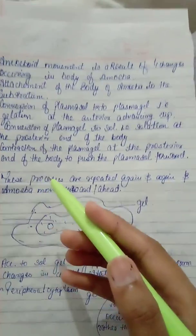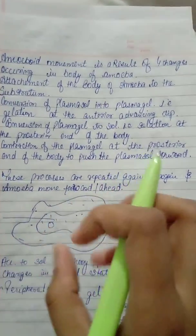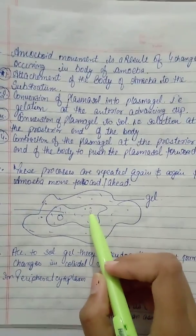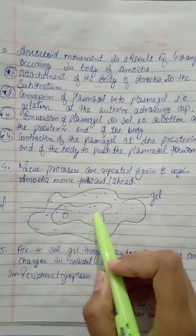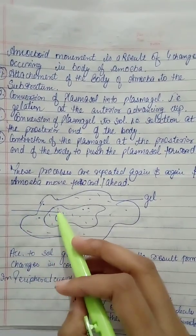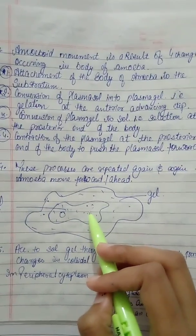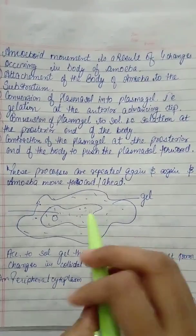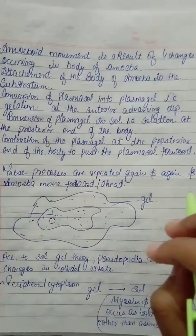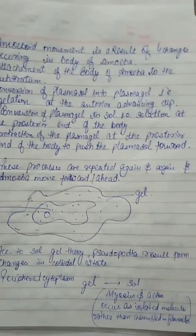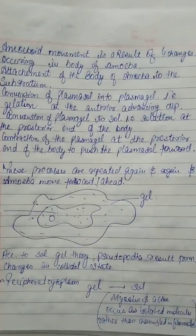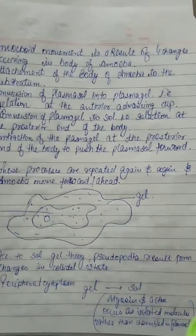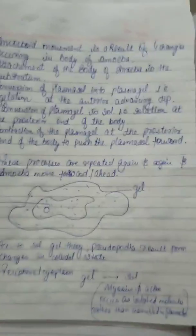In the fourth step, the contractions of this plasma gel occur. After conversion of sol to gel in the inner region, the gel — being solid — in the inner part will just move forward into the ectoplasm part and will form a projection. Because of this projection, pseudopodia are formed, giving a finger-like projection.